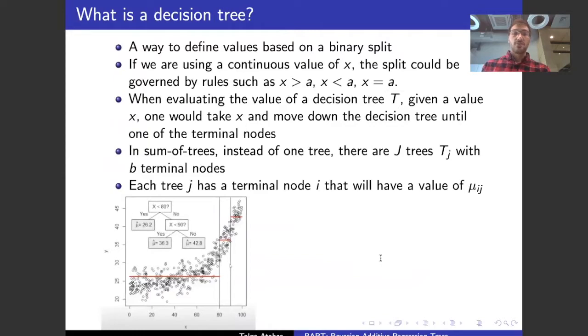The decision tree is just a way of defining binary splits. If we have our data being here, like x is less than 80, that's a possible decision to be made about the data, and then there's a binary split where that's either true or false. What's important is when you're evaluating a tree t given a value x, you always move down and go to the terminal node, and that's going to be the value that you have. For example, if x equals 50 here, then the terminal node is going to be the first node here, and mu equals 26.2.